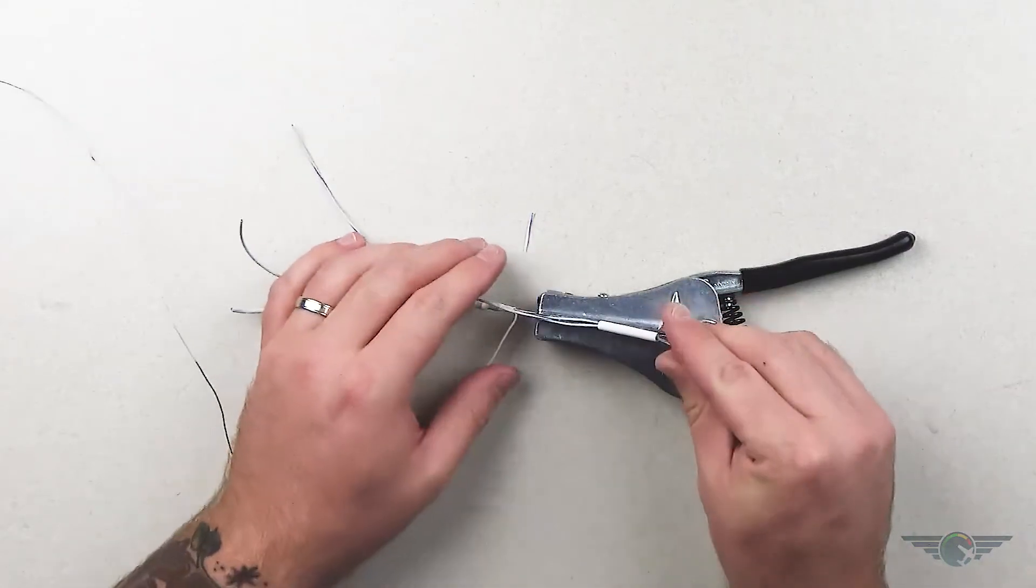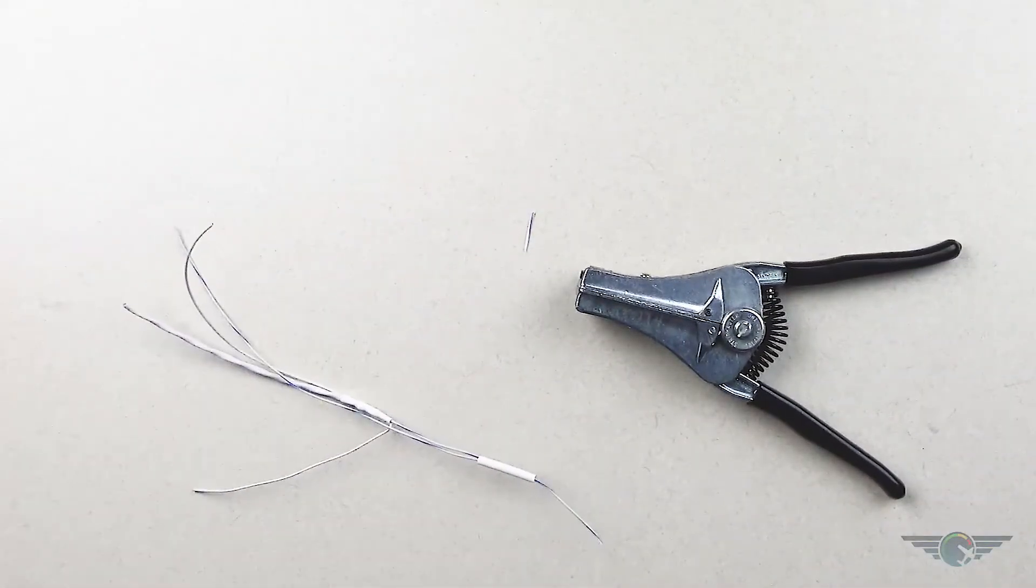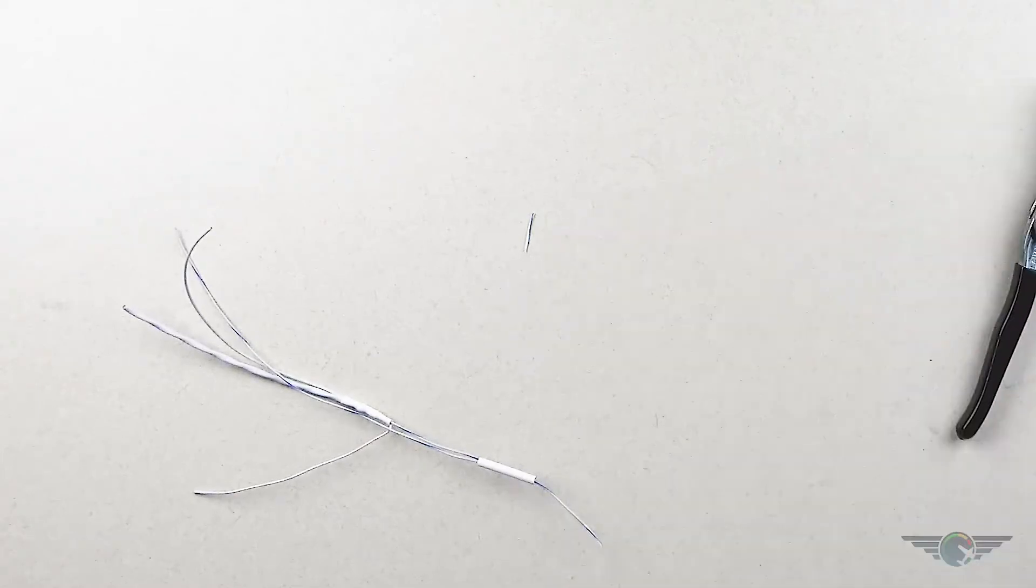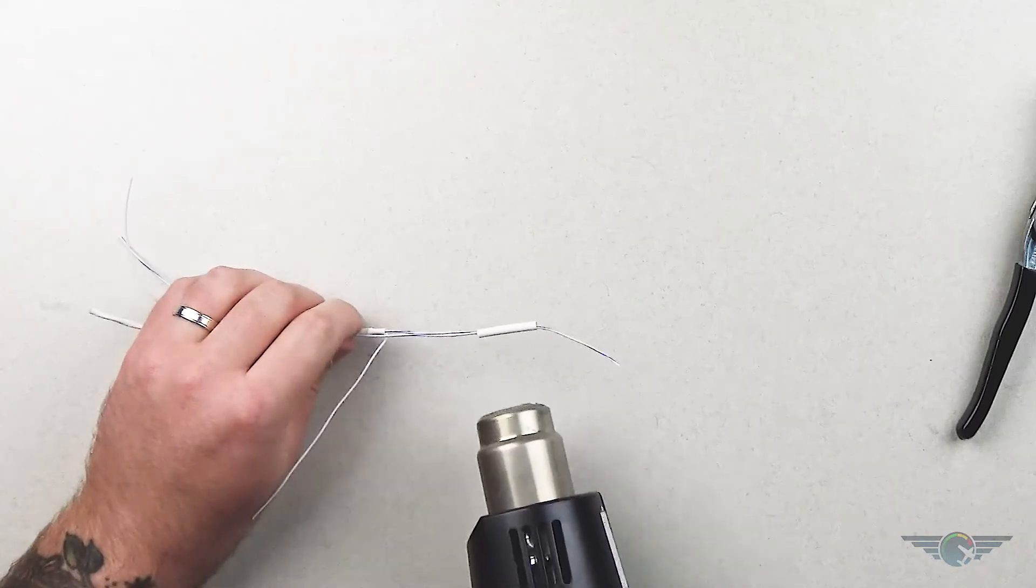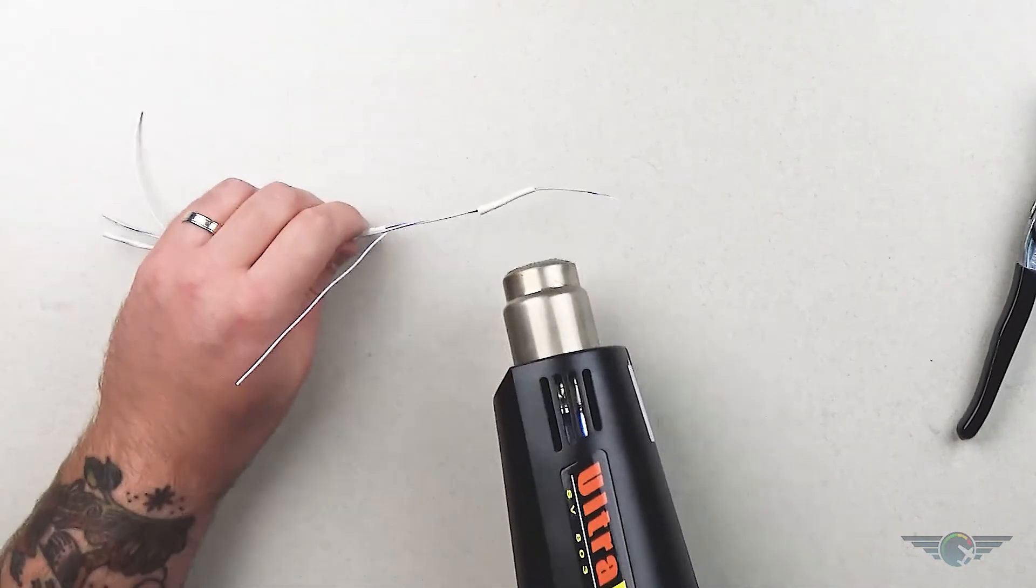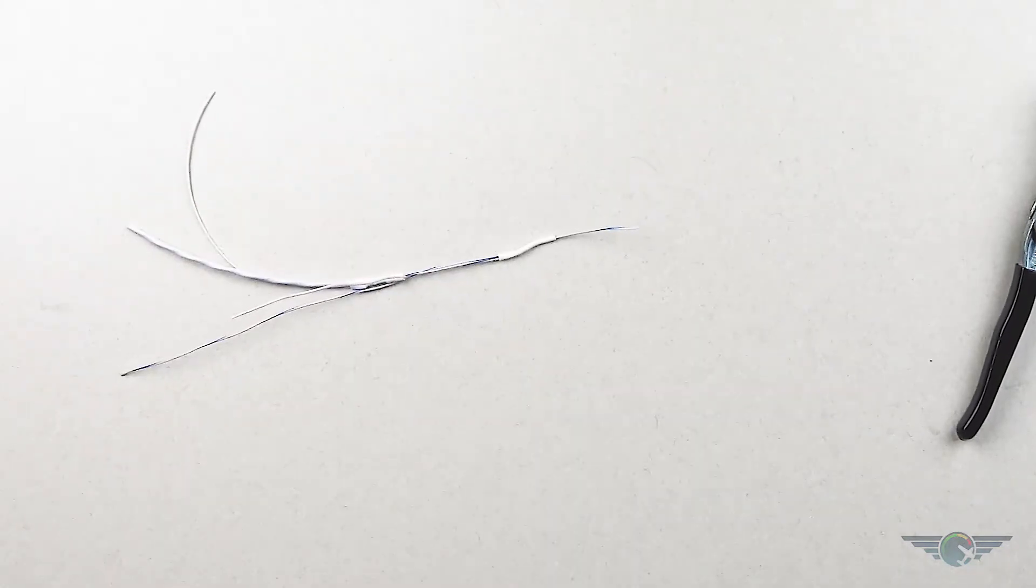And then I'm going to put my piece of heat shrink over that and I'm going to use my heat gun.